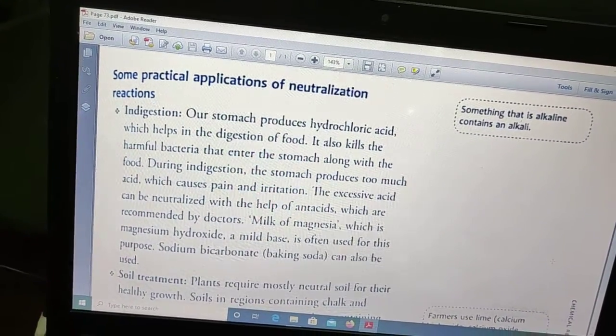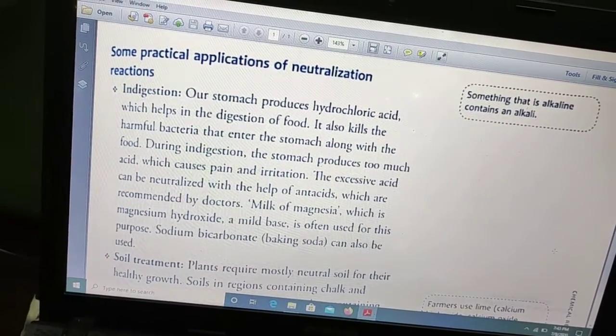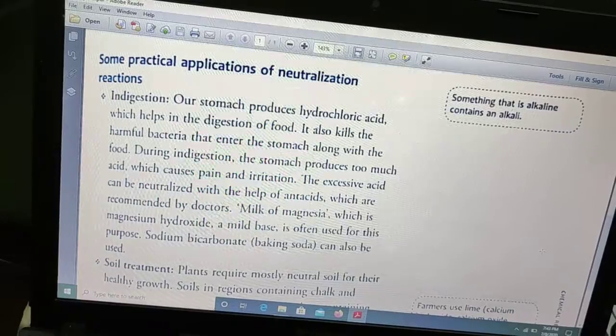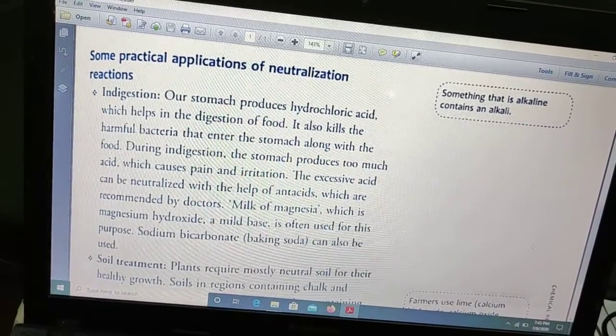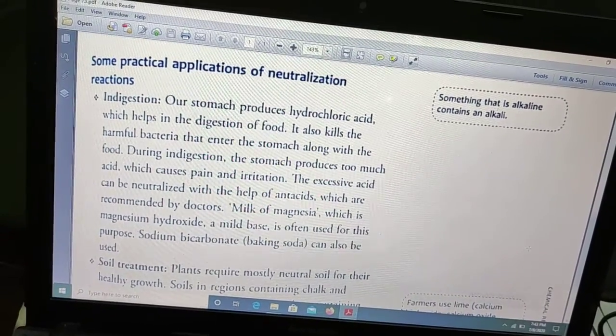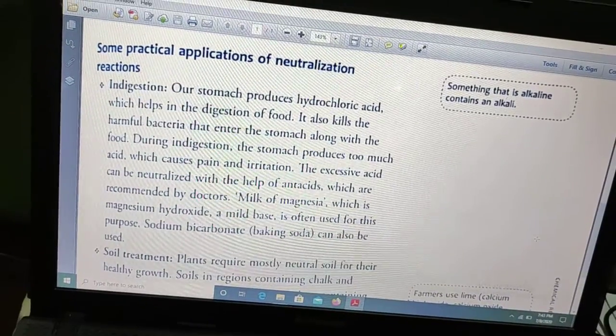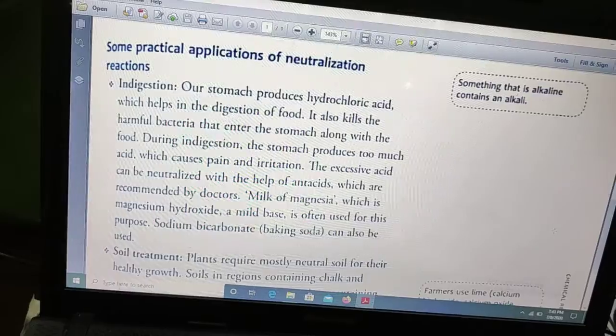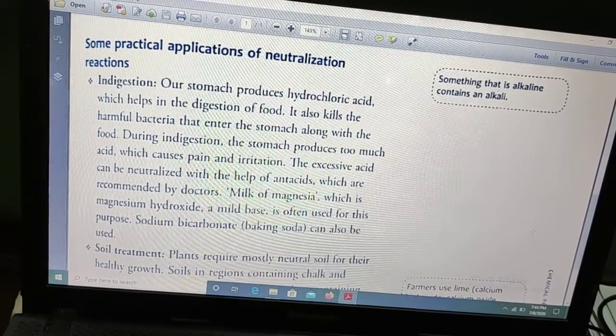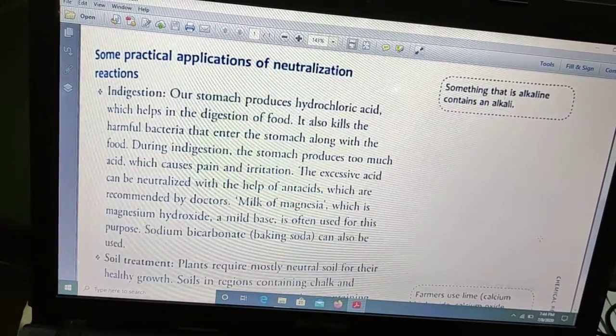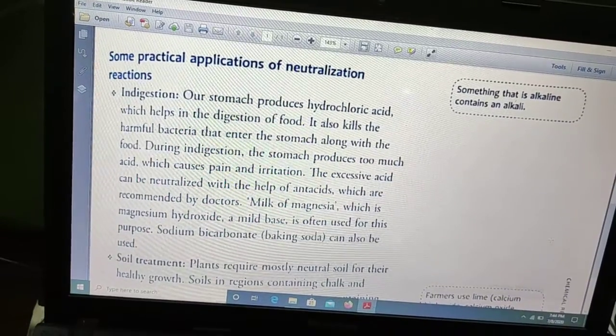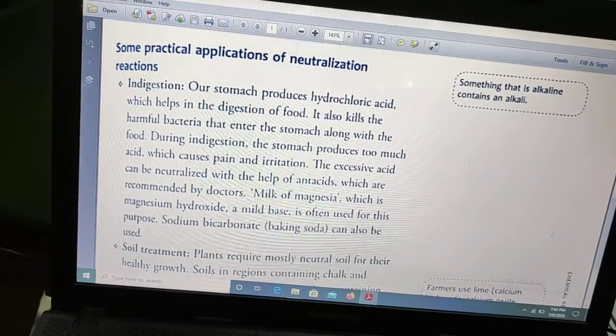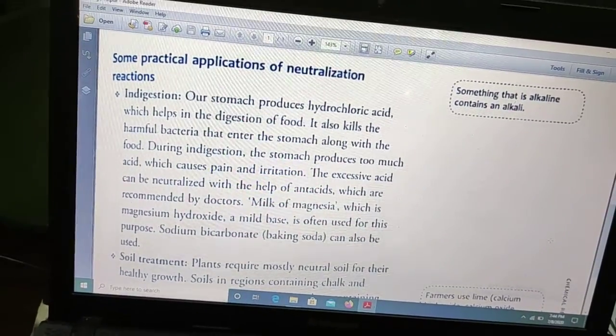Our stomach produces hydrochloric acid which helps in the digestion of food. Now during indigestion, what will happen? If the acid is excess, then the stomach produces too much acid which causes pain and irritation. At that time we generally take antacids, which are recommended by doctors, known as milk of magnesia, which is magnesium hydroxide. Sodium bicarbonate or baking soda can also be used. At this time we frequently use Eno, which will neutralize the acid that is produced in our body. That is the first application.